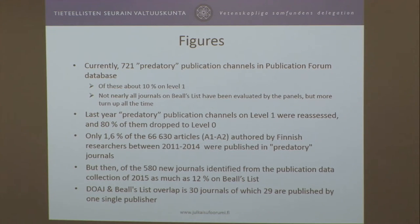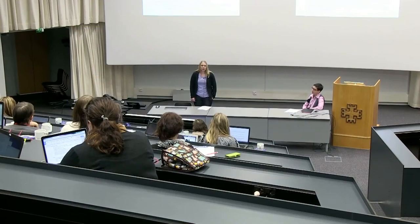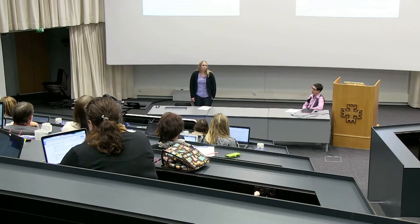A comparison between journals in our database indexed in the Directory of Open Access Journals and Beale's list shows an overlap of 30 journals, of which 29 are published by one single publisher — which is actually Frontiers. So it seems that DOAJ is quite a good white list for open access journals, and all 30 of these are on level one.